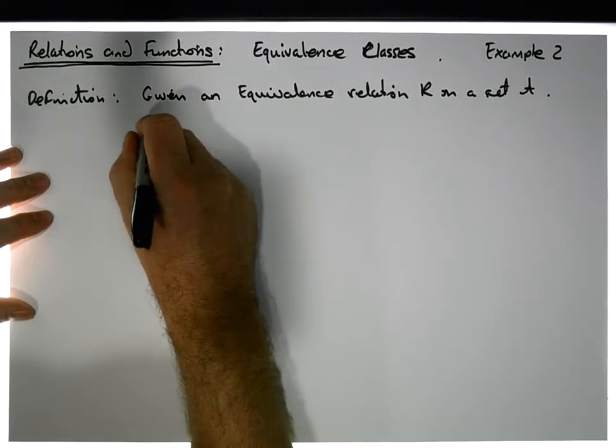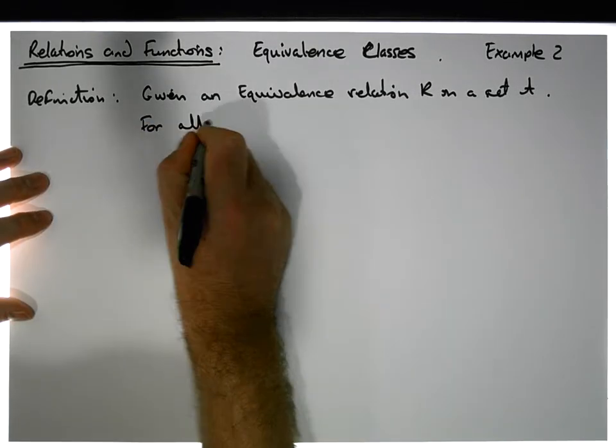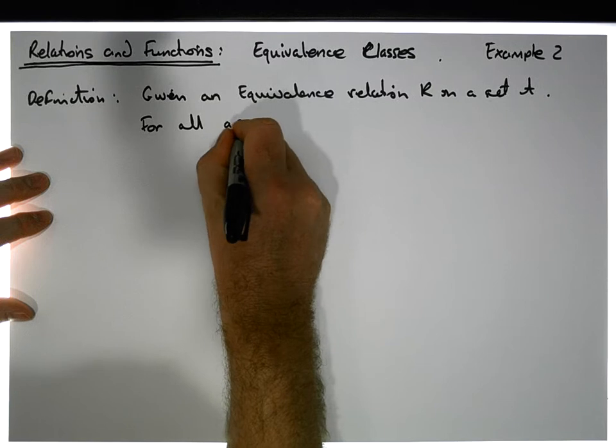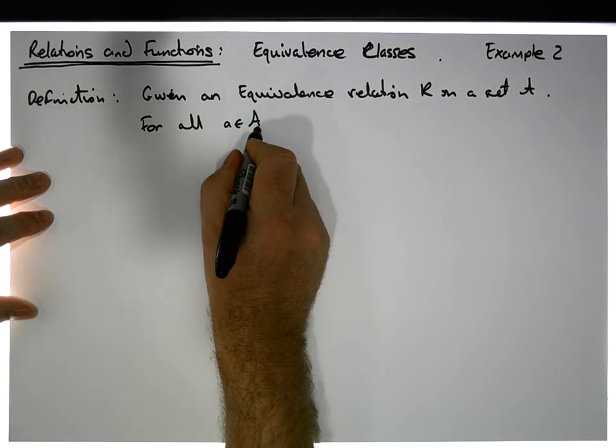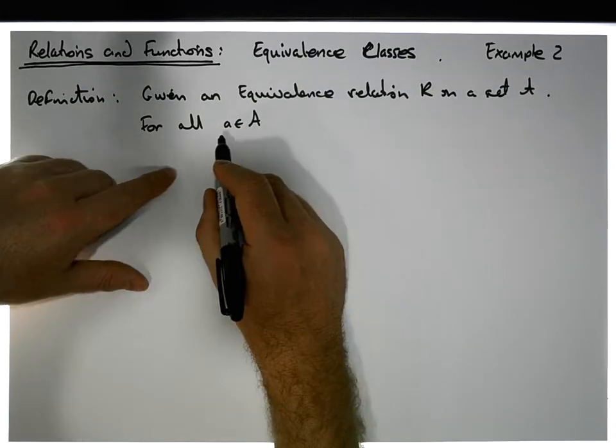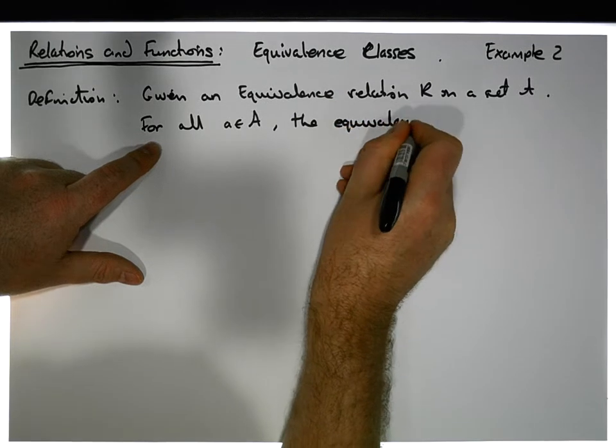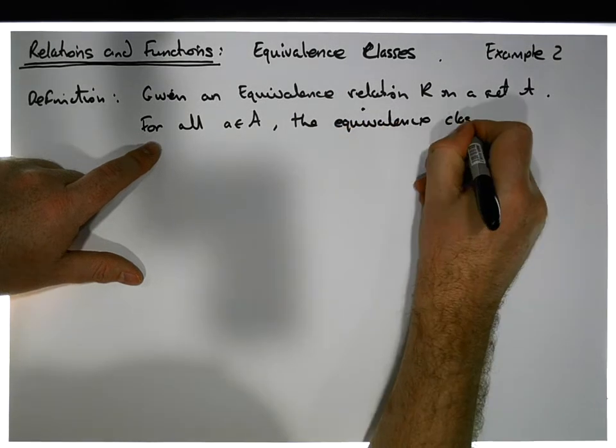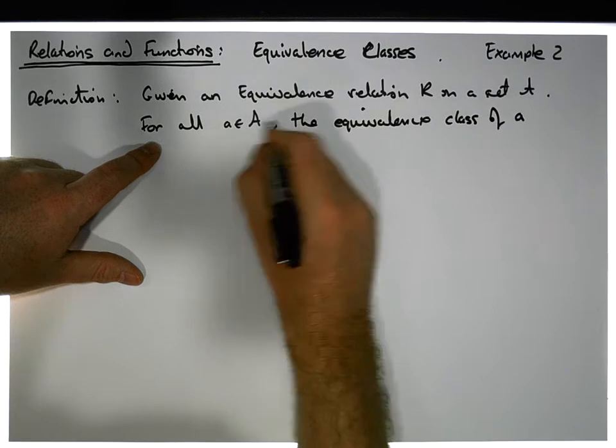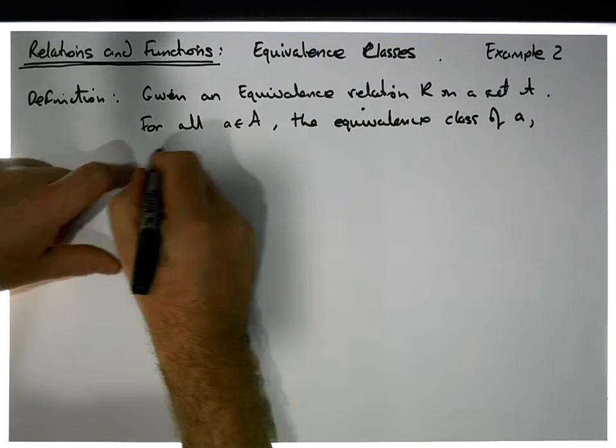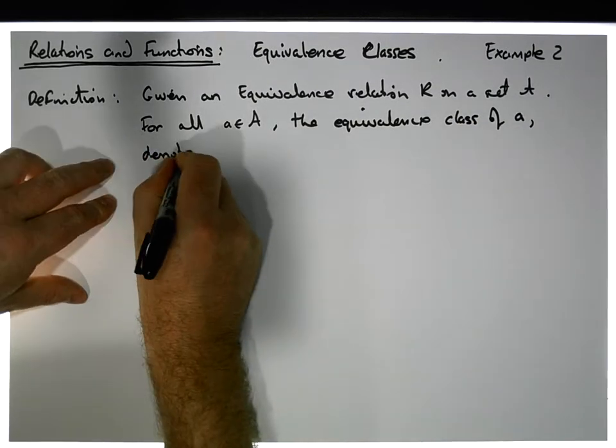Well then, for all values in A, so for all values that are in the set A that the relation is built on, the equivalence class of this value that's in A, of A, denoted square bracket A square bracket, is simply the set of observations or members of A that have the